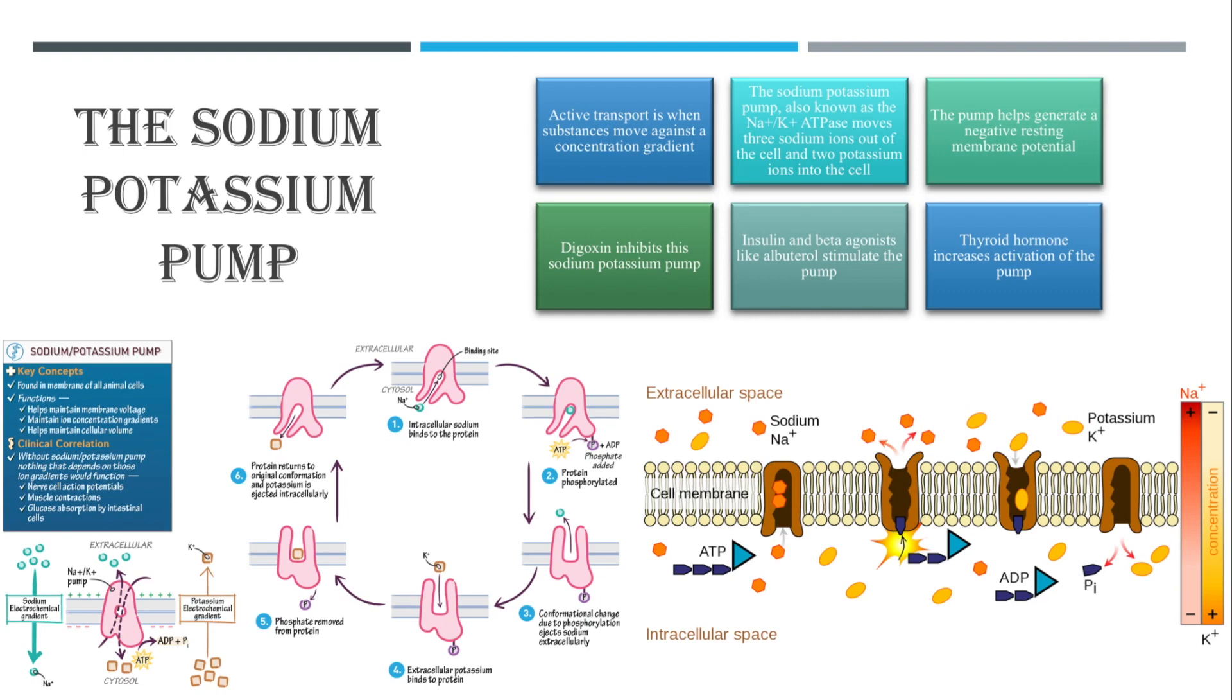Another drug that can activate the sodium potassium pump are beta agonists like albuterol, which people can take for asthma. So these are the drugs that are given when someone has too much potassium in their blood.